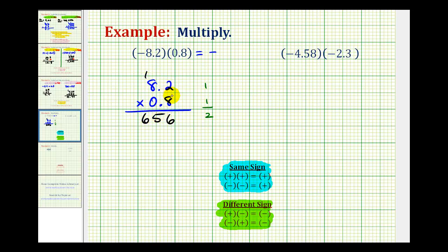So now we're done multiplying, but we know this product must contain two decimal places. So starting at the right, move to the left two places. So one, two, so this product is 6.56, but again, we know this product has to be negative, so it's actually negative 6.56.